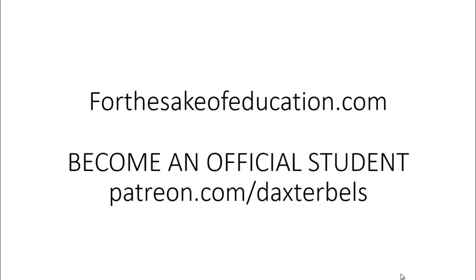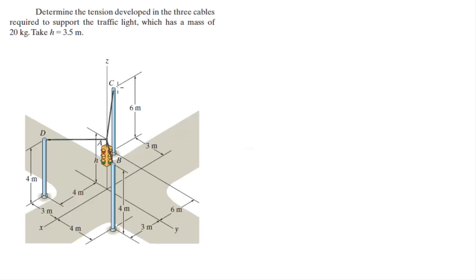For more videos visit ForTheSakeOfEducation.com or support me at Patreon.com/DaxterBells. Alright guys, let's do this problem where they want you to find the tension developed in each cable in order to hold this 20kg streetlight, knowing that H, which is the height of A, is equal to 3.5m.